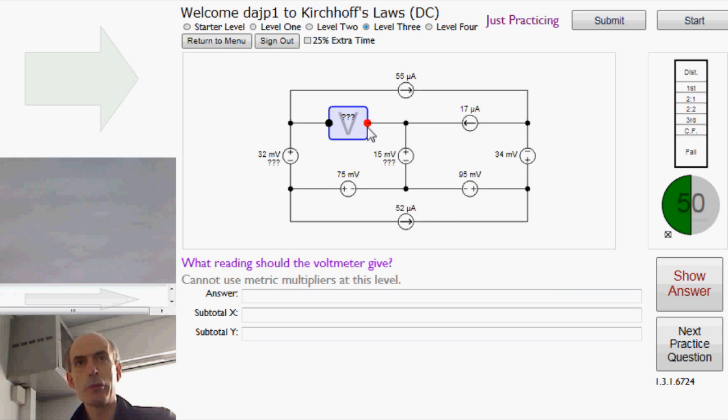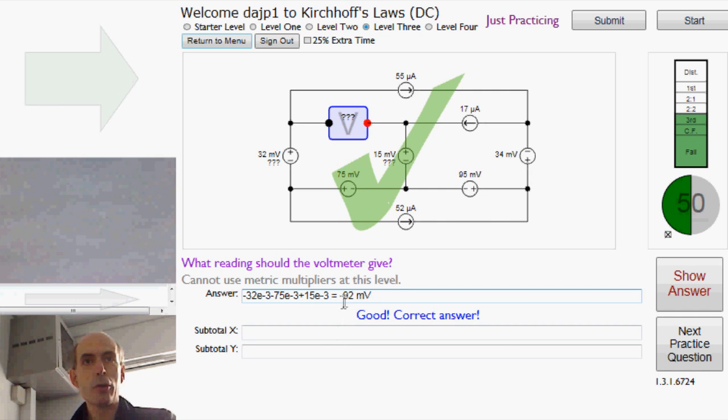So, to get from there to there, we've gone down by 32 millivolts, down by another 75 millivolts, and then up by 15 millivolts. So that's minus 32 millivolts, minus 75 millivolts, plus 15 millivolts. Total minus 92 millivolts, and that's what the meter will measure.